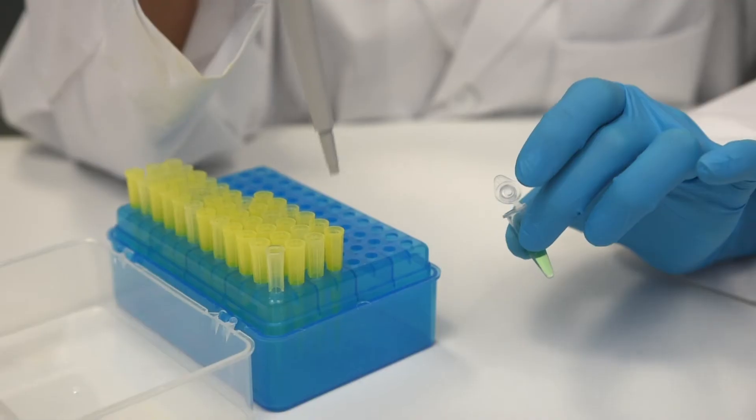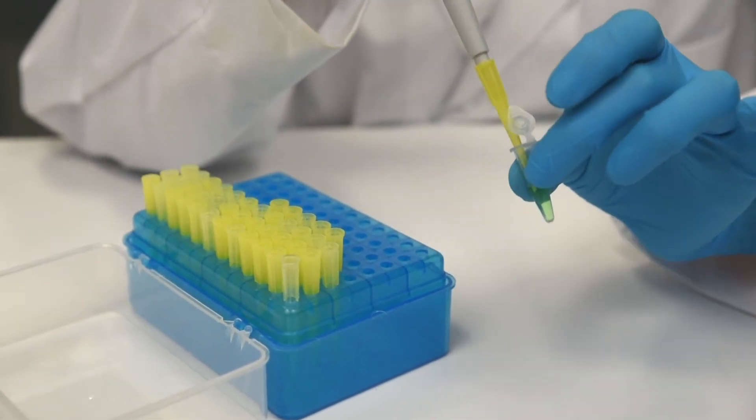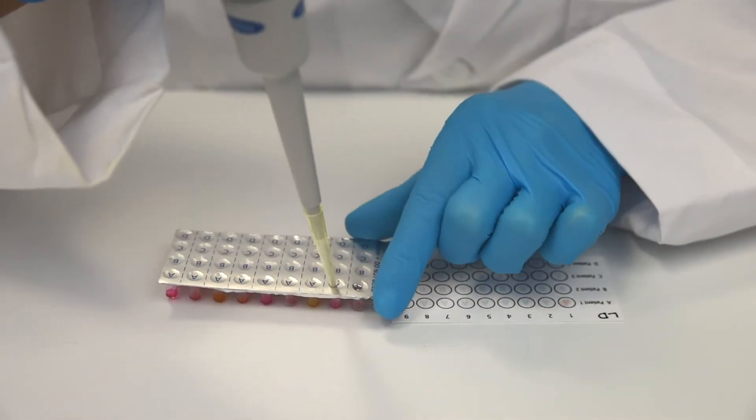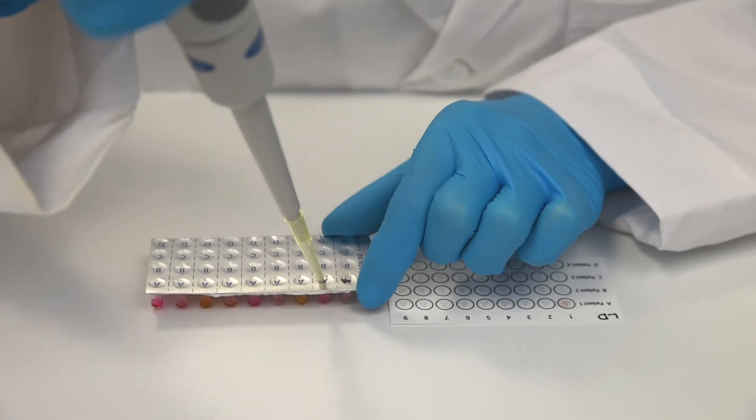Step 7. Using a fresh micropipette tip, repeat steps 4 through 6 for the second sample on the top row.